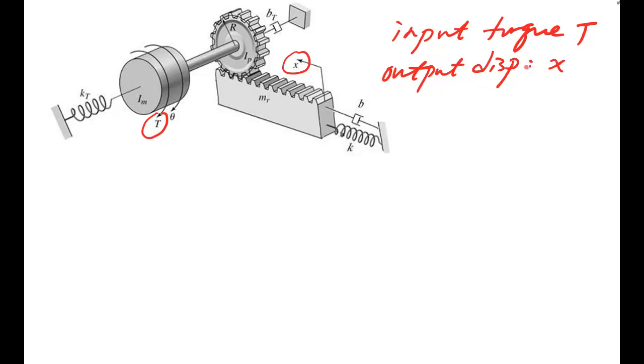So let's do a free body diagram. Let's isolate the systems. In this case, the drum will have a torque T and resistance from the dampers in the opposite direction, that's bₜθ̇.